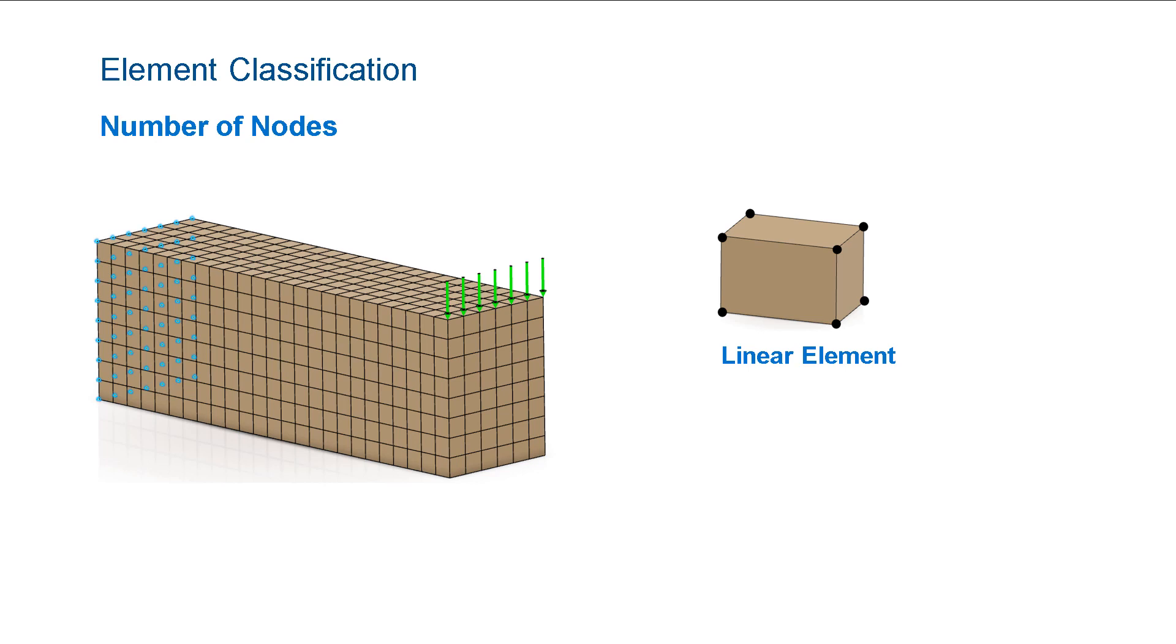As a result, we now want to introduce you to another brick element. In addition to the corner nodes, this element also has nodes at the midpoint of all of its edges, for a total of 20 nodes. This is a quadratic element and has some advantages over the 8-noded element.